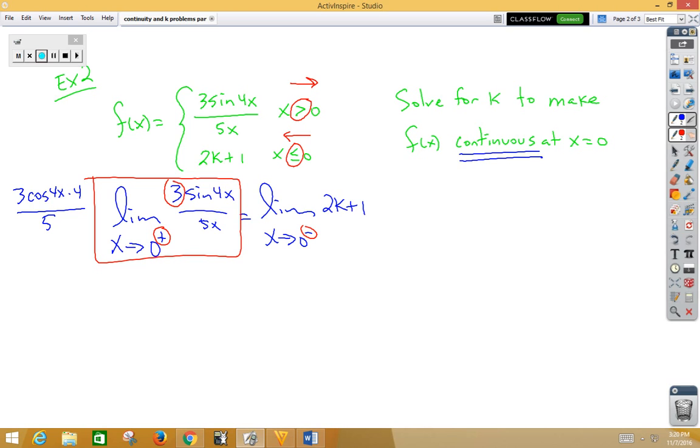Or, we know that we can simply multiply the 3 times the 4 and get the 12 over 5 as our limit. On the other side, when we plug in the 0, notice there's no x value, so that's just 2k plus 1.